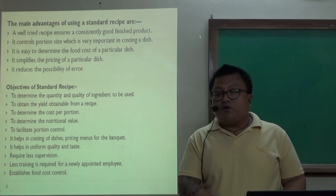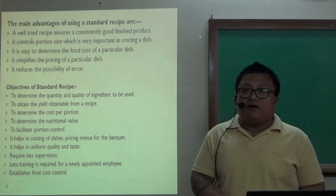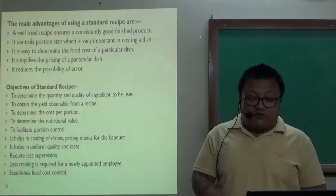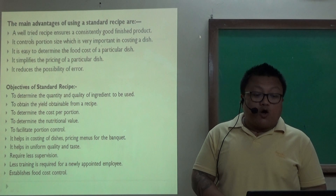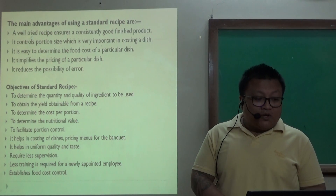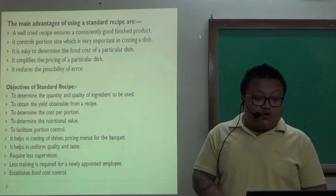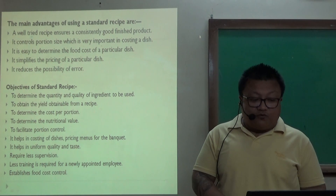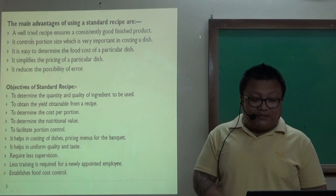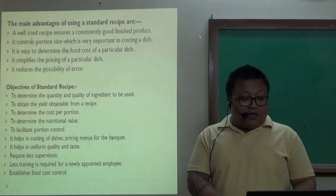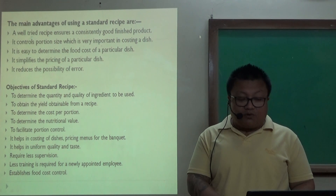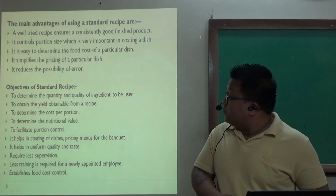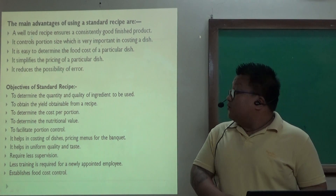The objectives of standard recipes also play an important role in indenting. The first point is to determine the quantity and quality of ingredients to be used, to obtain the yield from a recipe, to determine the cost per portion, to determine the nutritive values, to facilitate portion control, and to help in costing, pricing, and menu planning for a banquet or kitchen. It helps ensure uniform quality and taste, requires less supervision, and less training is required for newly adopted employees, and helps establish food cost control.